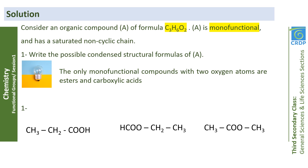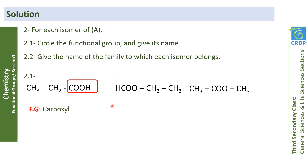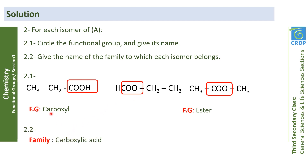For each isomer, we circle the functional group, give its name, and name the family. The first structure has the COOH group, named the carboxyl group, belonging to the carboxylic acid family. The other two structures have the COO group, which is the ester group, belonging to the ester family.